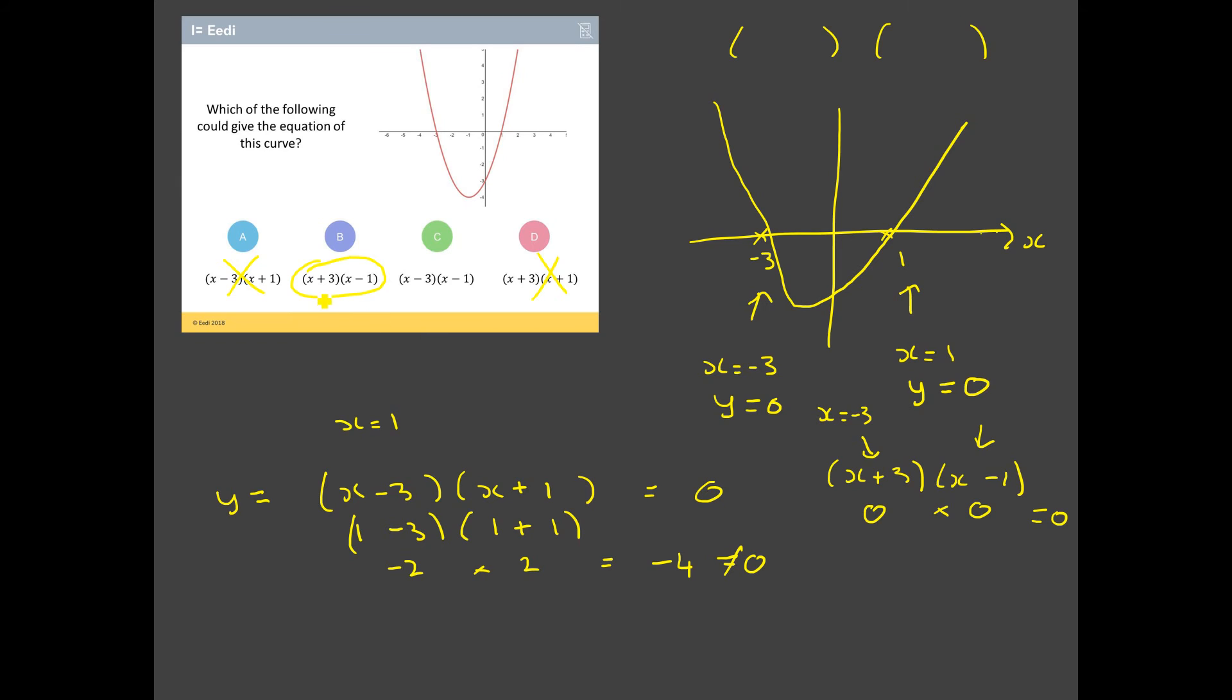And the best way to think about that is you are looking for values of x that when you substitute them into the brackets, give you zero out. And we know that one of those values of x must be one. So one in there is going to give me zero. And we know that one of those values of x must be negative three. And indeed, if I substitute negative three into that, I get zero out. So when I think about factorizing and looking where things cross the x-axis, I'm always thinking values of x that make my y equal to zero.